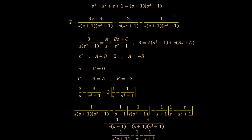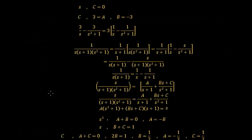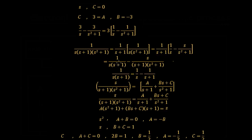Now we expand the second section: 1/[s(s + 1)(s² + 1)]. Taking out a factor of 1/(s + 1), this leaves us with 1/[s(s² + 1)], which we've already seen — that equals 1/s − s/(s² + 1). Multiplying back gives 1/[s(s + 1)] − s/[(s + 1)(s² + 1)]. The term 1/[s(s + 1)] can be written as 1/s − 1/(s + 1).